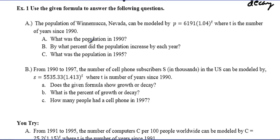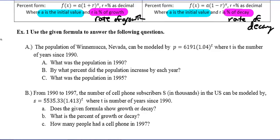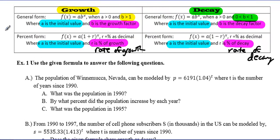The population of Winnemucca, Nevada can be modeled by p = 6191(1.04)^t where t is the number of years since 1990. Part A asks us, what's the population in 1990? I know it's growth because this number is greater than 1, so the population is getting bigger. That initial value means in 1990, there were 6,191 people living in Winnemucca, Nevada.